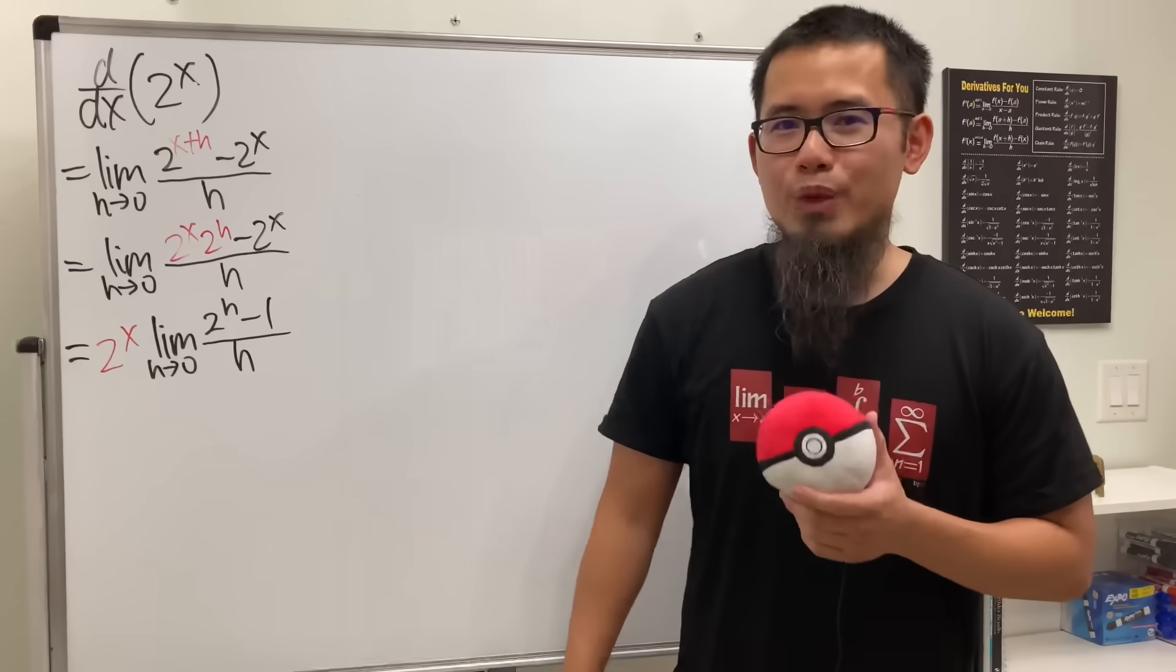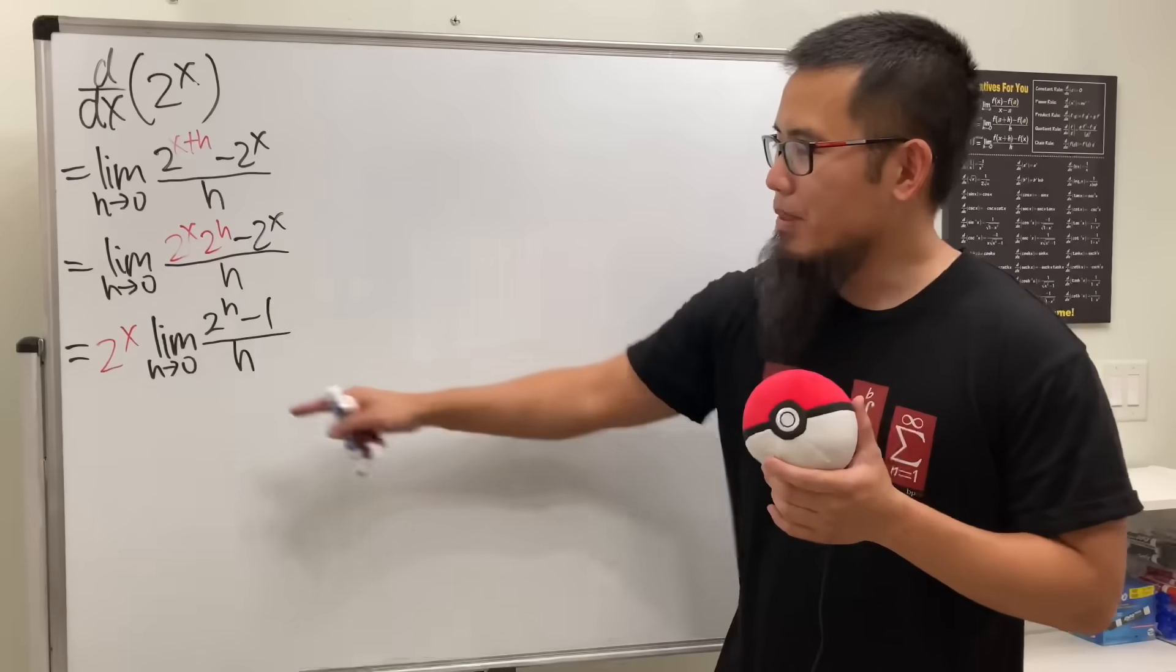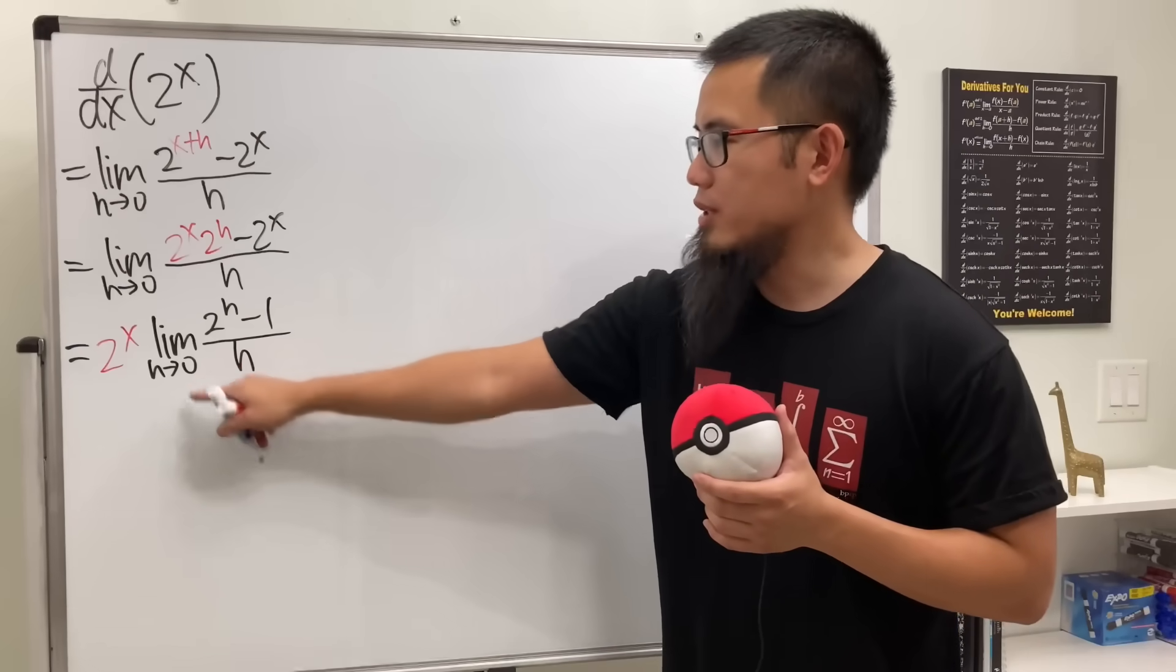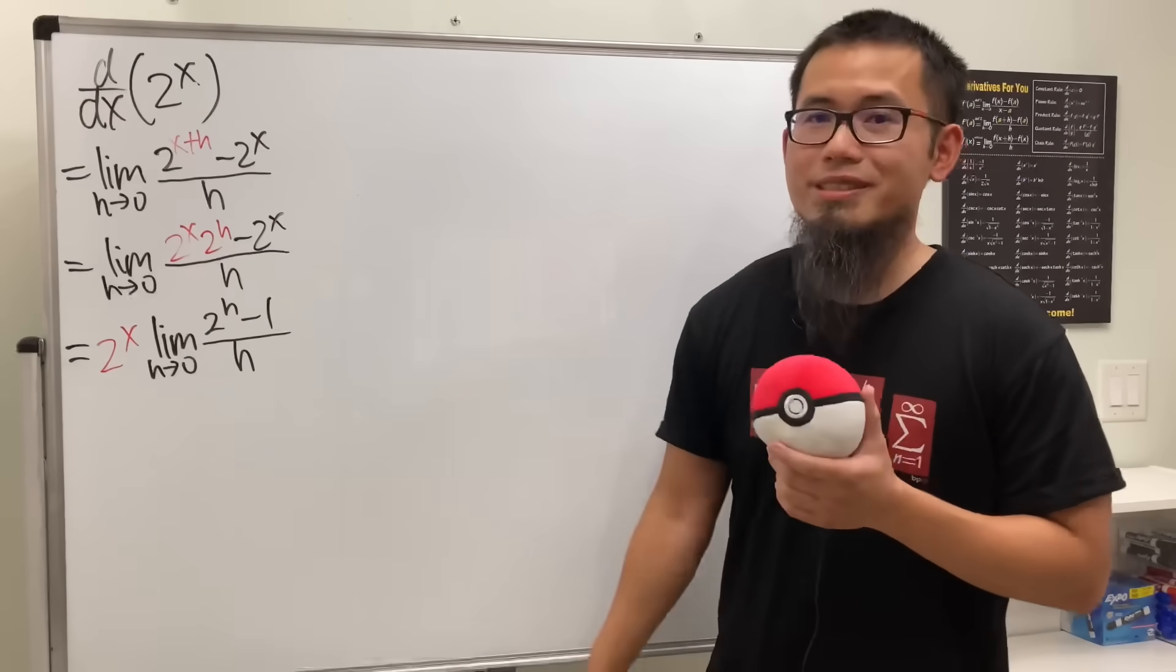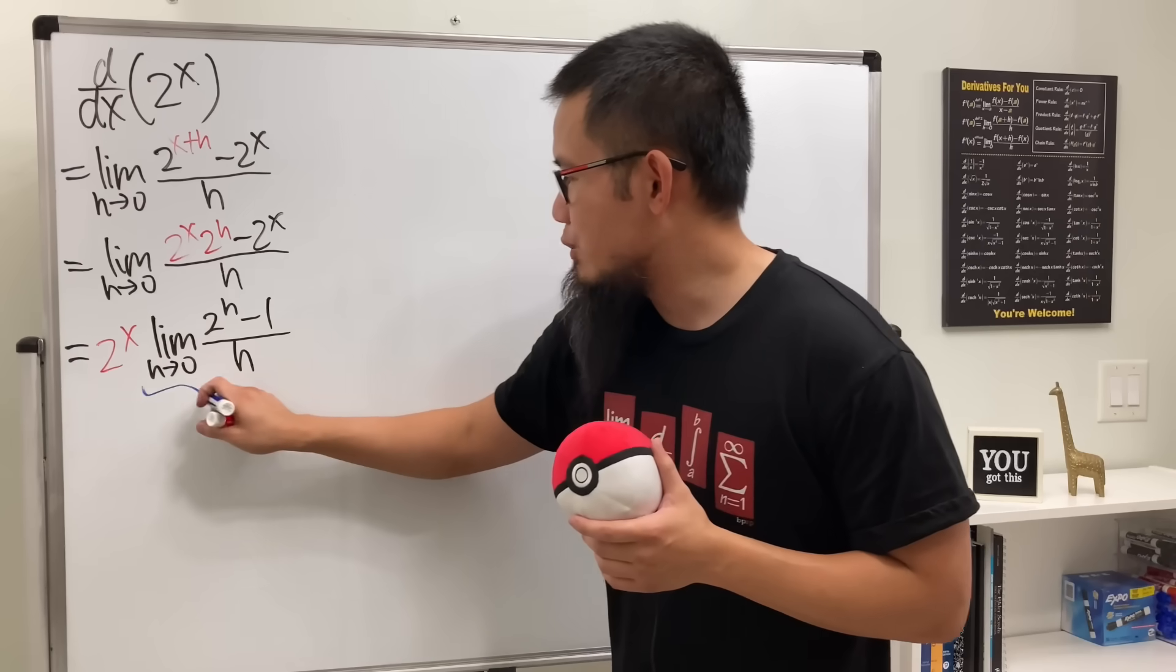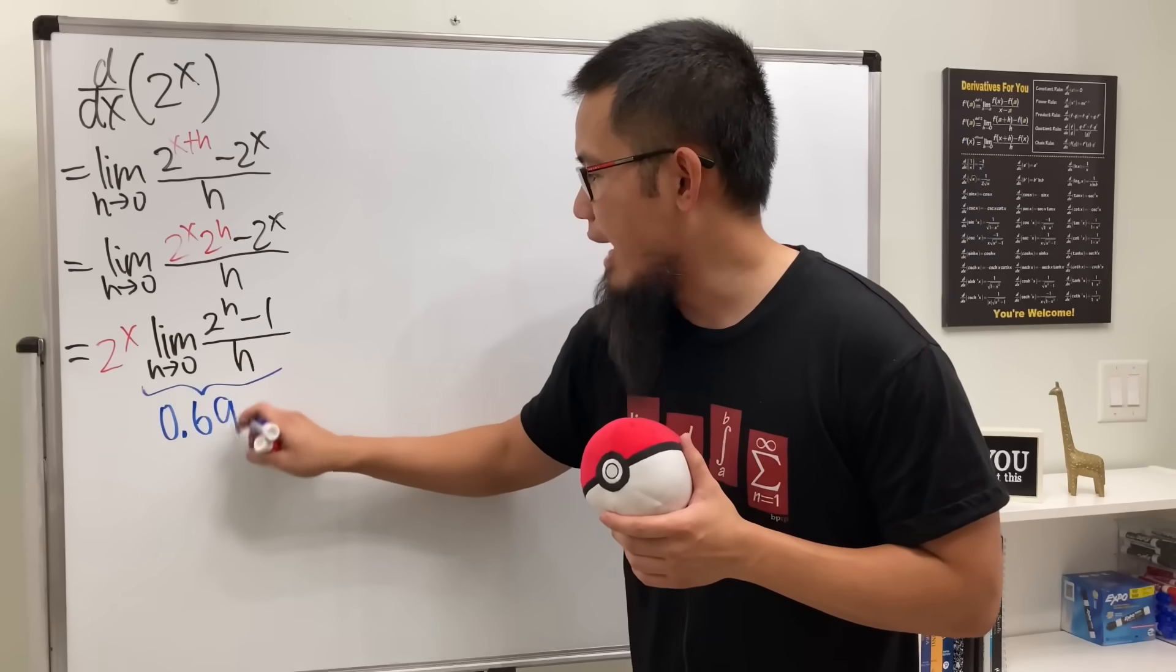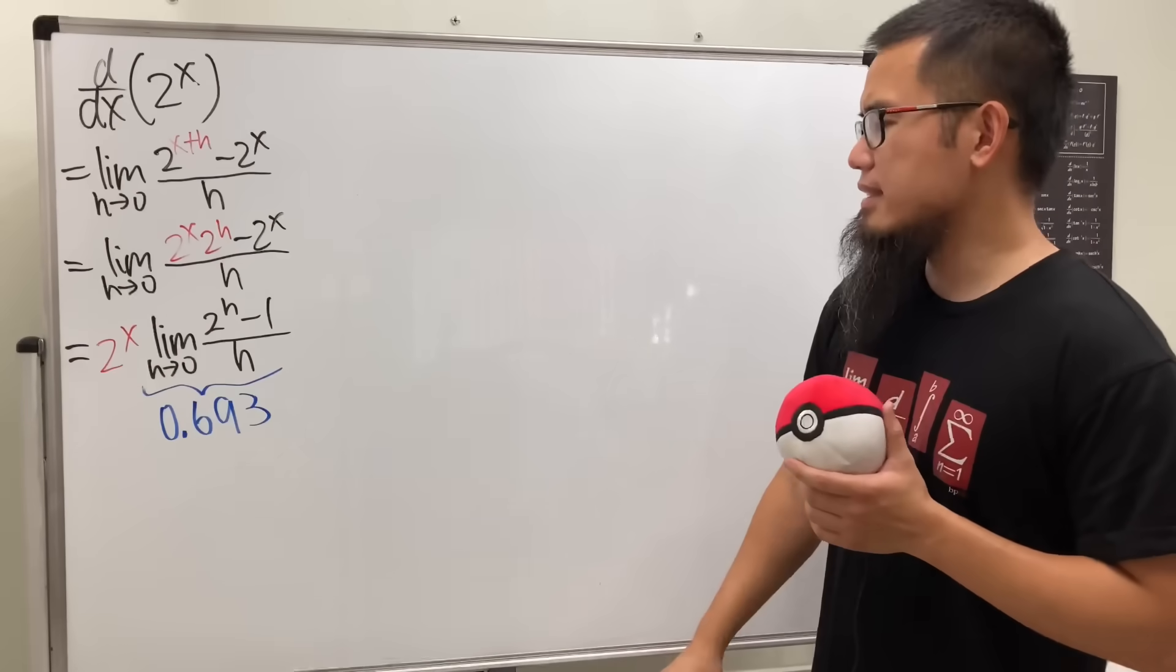Well, I have no idea how the ancient people did it because they didn't have a calculator. So this is like a modern way. What we can do is just use the calculator. We can plug in, let's say 0.001 because h is approaching 0. So put these numbers in and see how it goes. And you can look at the chart right here. This will give you about 0.693.